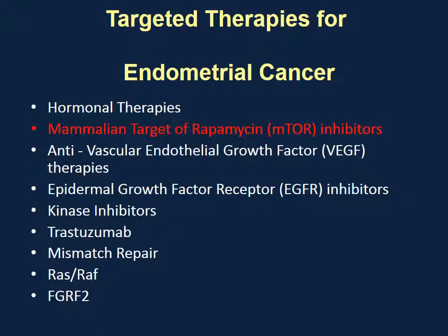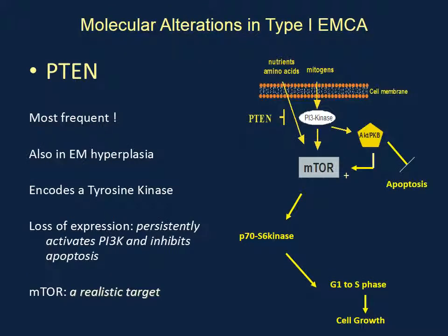I mentioned the mTOR pathway, or the mammalian target of rapamycin. We have a series of mTOR inhibitors, and we know that this is an important pathway that's often mutated in endometrial cancer. PTEN is the most common gene that's mutated in endometrial cancer, and we feel that if we inhibit mTOR — that pathway — that could lead to potential treatments for endometrial cancer.